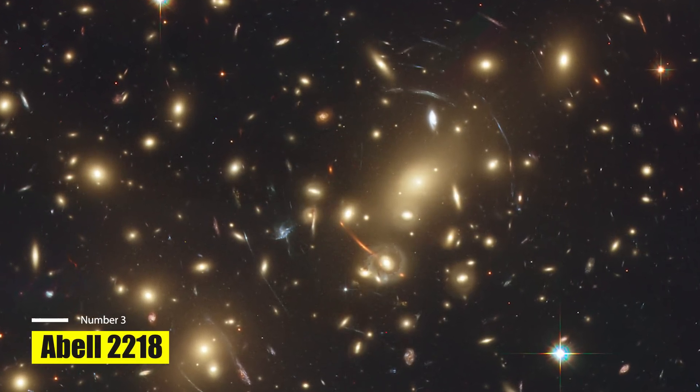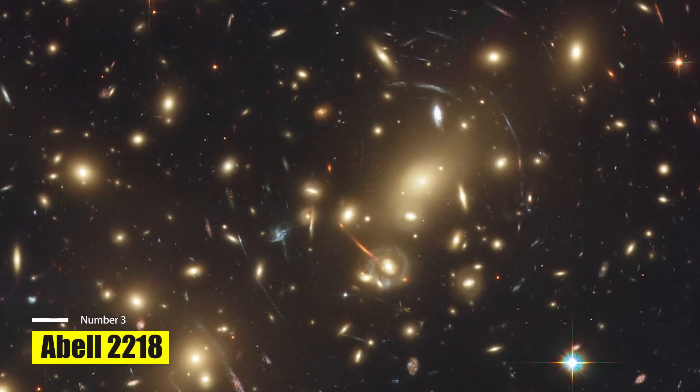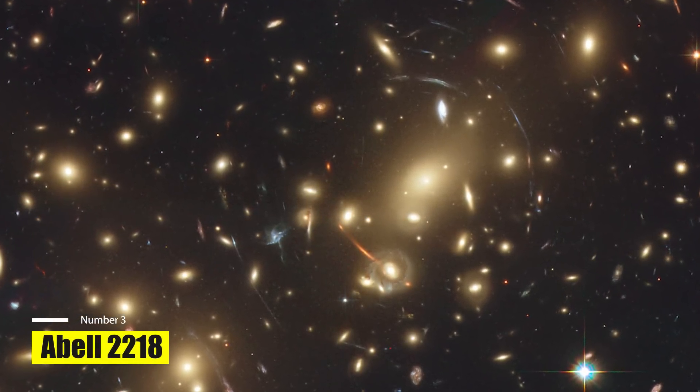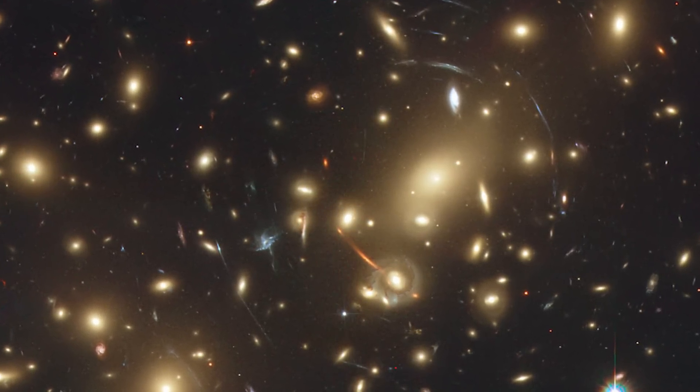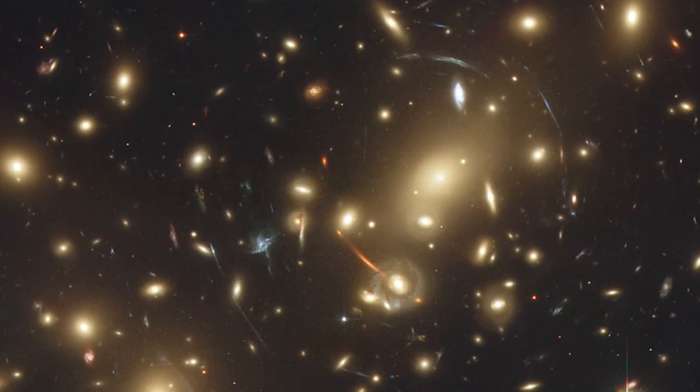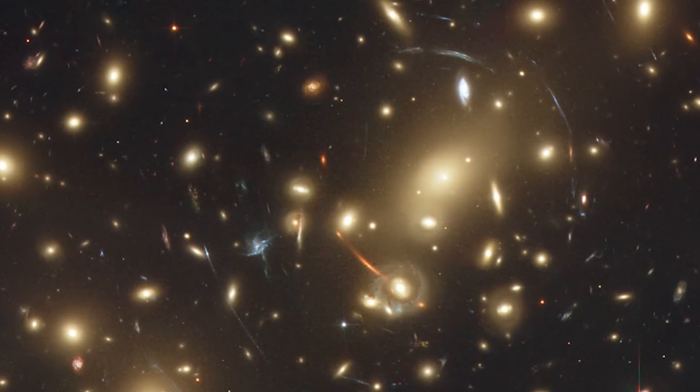Abel-22-18. The image displays Abel-22-18, a dense galaxy cluster consisting of thousands of distinct galaxies. Positioned approximately 2.1 billion light-years from Earth, it resides in the northern constellation of Draco.